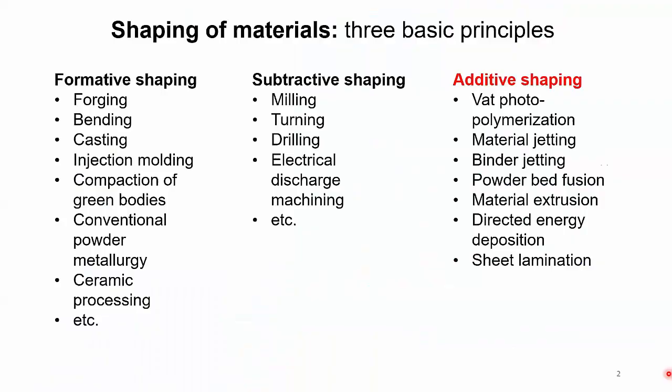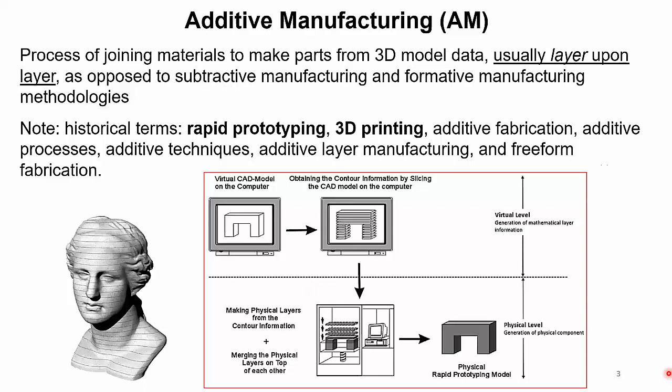Thinking of shaping of materials, there are three basic principles. One is the so-called formative shaping, such as forging, bending, and casting — not all of these are applicable to ceramics. Then you can have subtractive shaping, which is applicable to ceramics either before or after sintering. And then there is additive shaping or additive manufacturing, which is based on the joining of materials to generate parts from model data, typically in a layer-upon-layer fashion. This is very different from subtractive and formative manufacturing technologies.